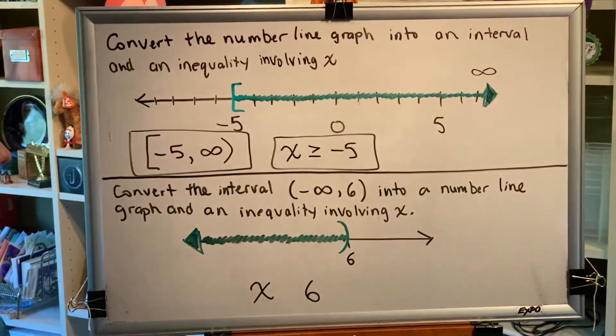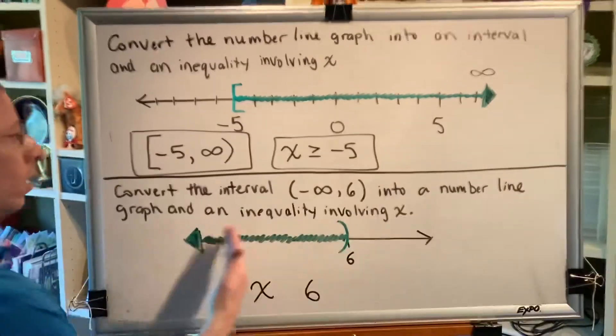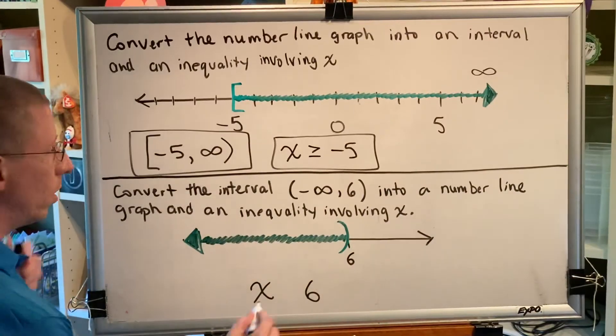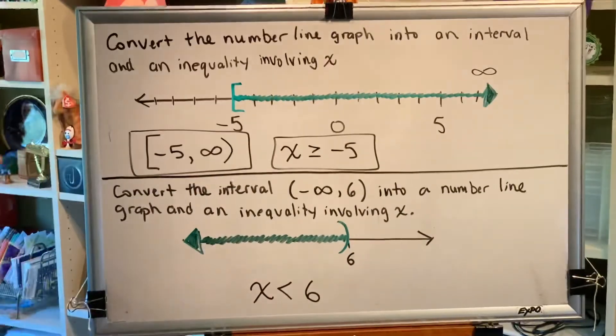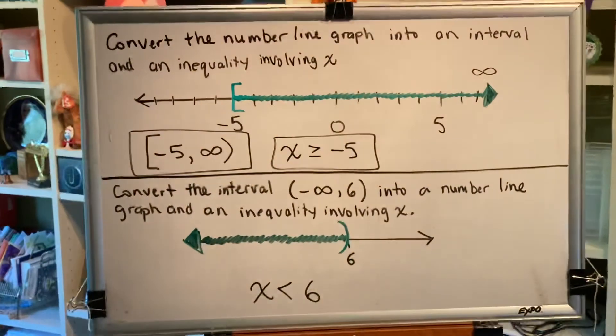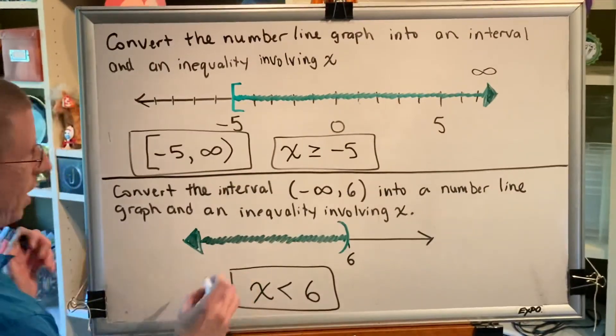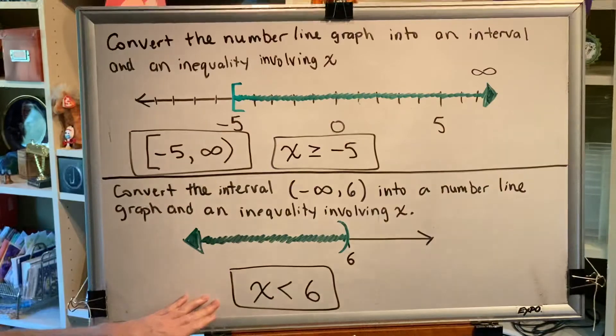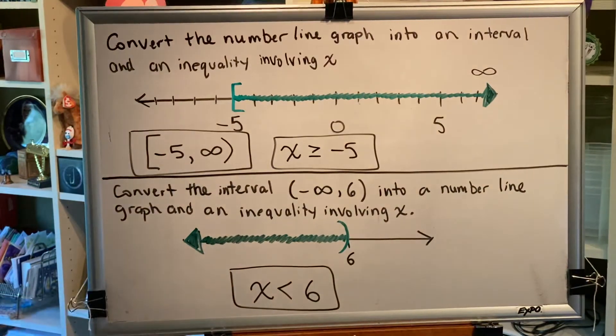Well, the shading is to the left, so we will use a less than symbol to indicate our inequality's sense or direction. So this is the answer to our second problem. This is the inequality. This isn't the inequality; this is the number line graph.